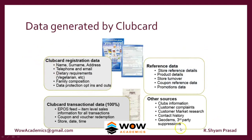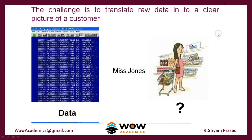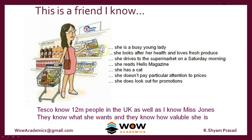With this data, the company knows at what time the customer is buying, where they are buying, what they are buying, and what the worth of their purchase is. For example, every time you swipe, the company finds out who you are and tries to actively segment you. It might determine she is a busy young lady — because of certain items bought. She looks after her health because she bought healthy goods; she loves fresh produce; she drives to the supermarket on Saturday mornings because of purchase times; she reads Hello Magazine because she bought it; she has a cat because she bought cat food; and she doesn't pay particular attention to prices because all her items are high-priced.